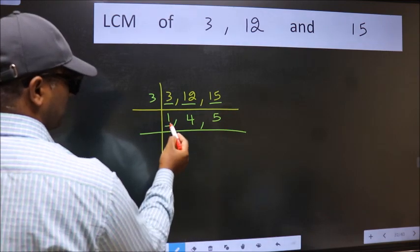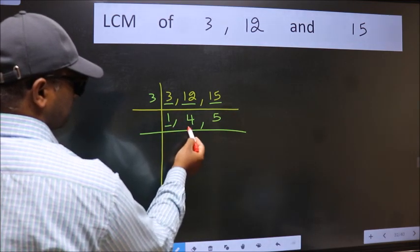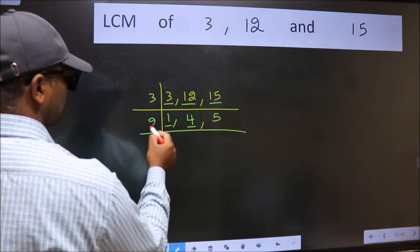Now we got 1 here. So focus on the next number 4. 4 is 2, 2 is 4.